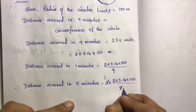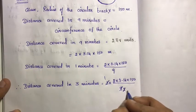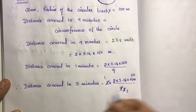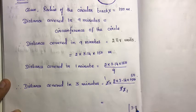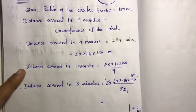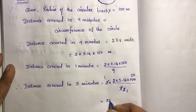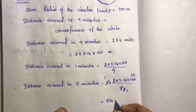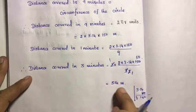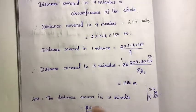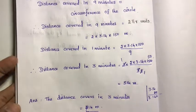Cancelling: 3 and 9 cancel to give 1 and 3. Then 3 and 150 give 50. So we get 3.14 into 100, which equals 314. The unit is meters. The distance covered in 3 minutes is equal to 314 meters.